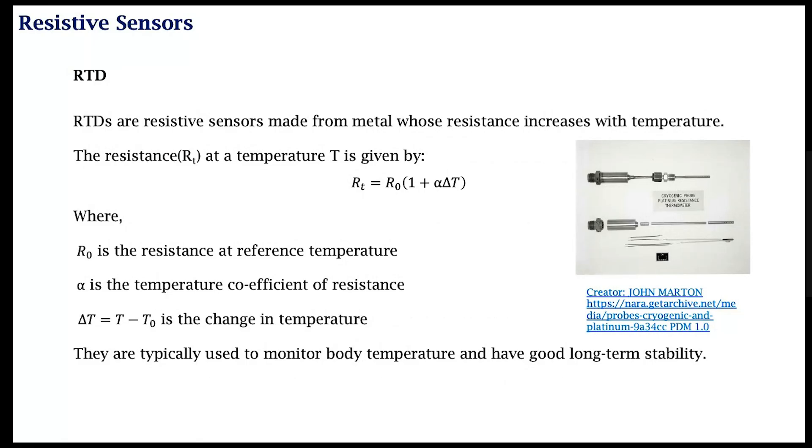Another device is the RTD. These are resistive sensors that are usually made of metal whose resistance relatively linearly changes with change or increase in temperature. So this is relatively linear. In this case, the measured temperature is Rt and the reference temperature is some R0, and there is a temperature coefficient α and a delta T, which is T minus T0.